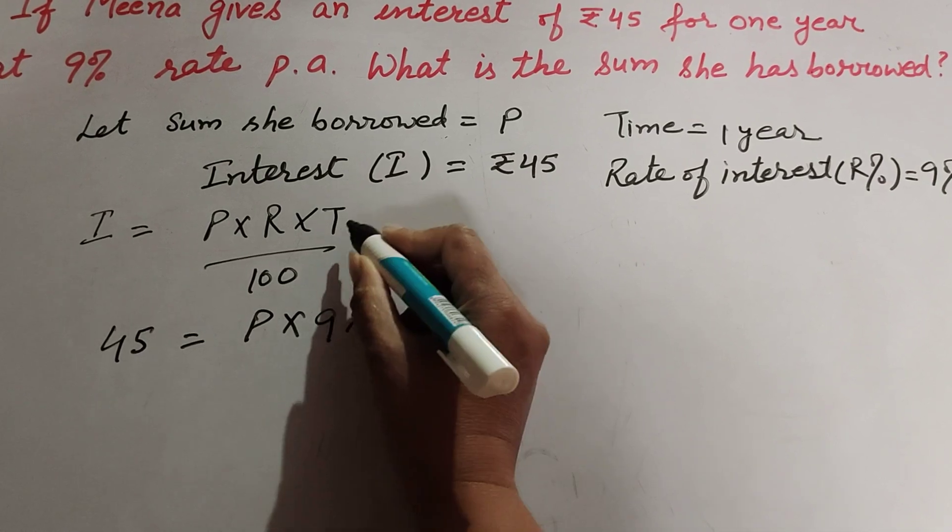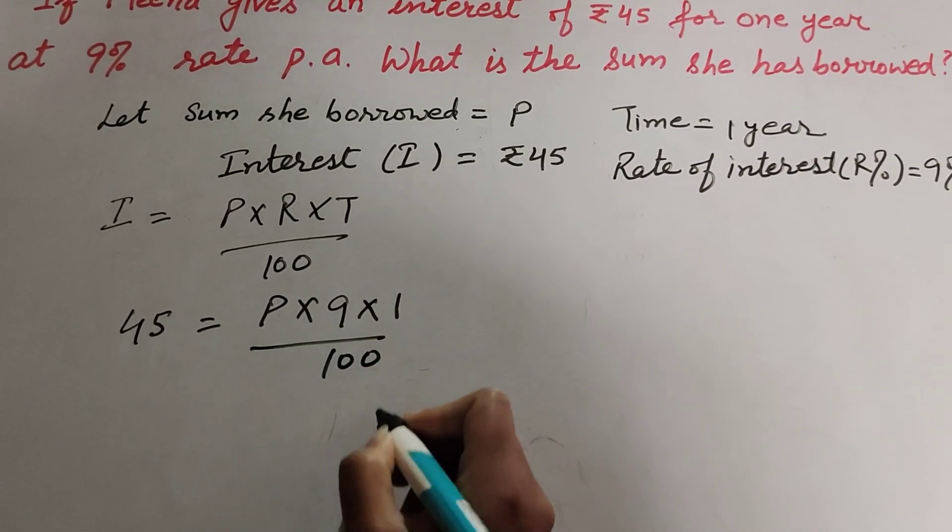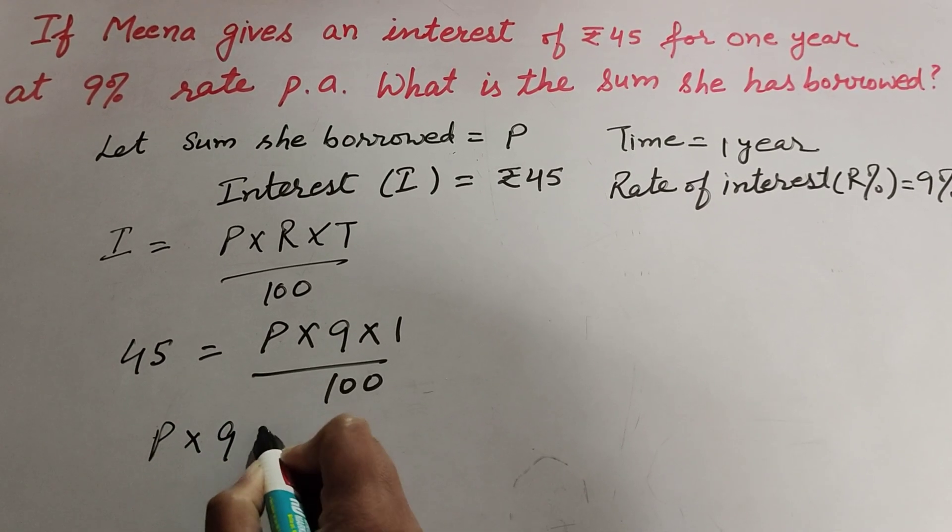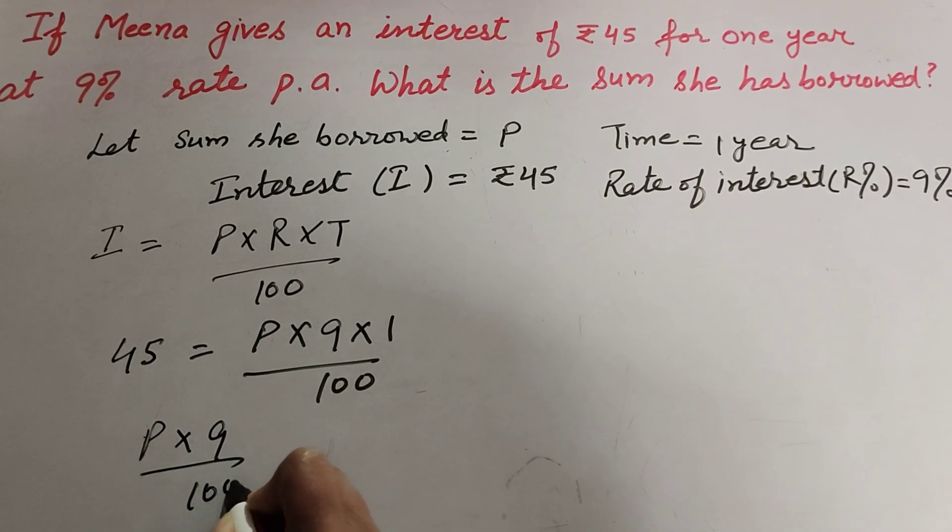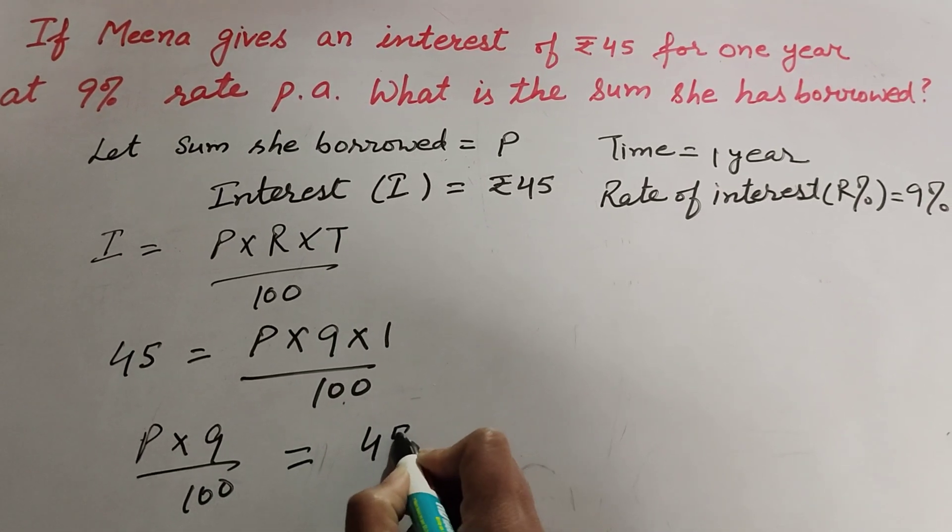This gives us 45 = P × 9 × 1 / 100, which simplifies to P × 9 / 100 = 45.